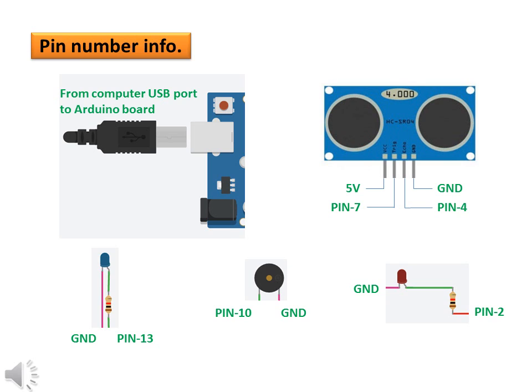Also, you can see the ultrasonic sensor has 4 pins. Connect the VCC pin to 5 volts. Connect the trig pin to pin 7. Connect the echo pin to pin 4.